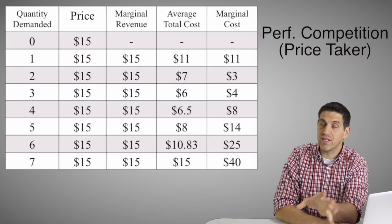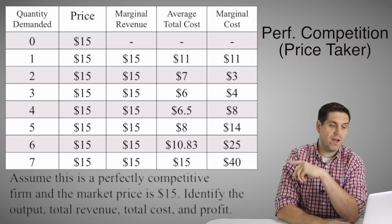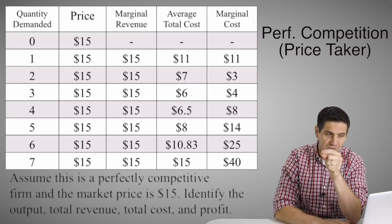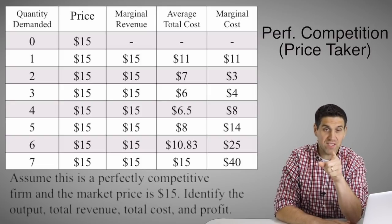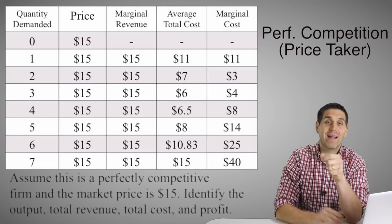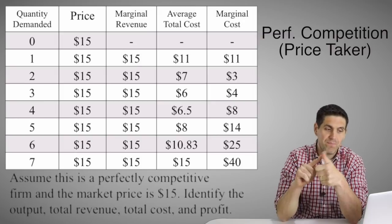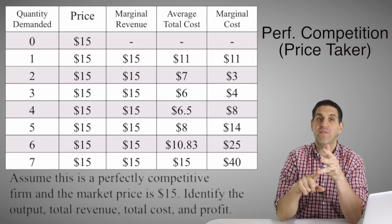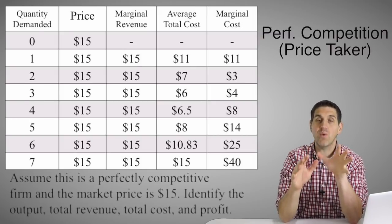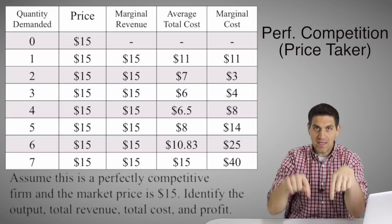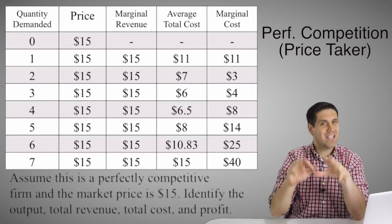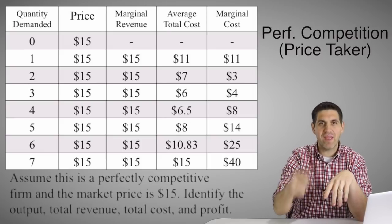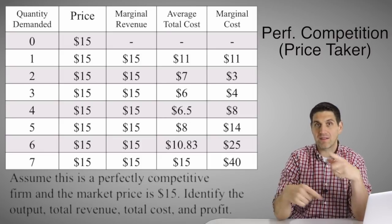Now I have enough information to do some calculations using the chart. If this is a perfect competitive firm and the price is $15, identify the output, the total revenue, total cost, and calculate the profit. Pause the video, see if you can do it, and then start back up. We'll go over the answers and give you more practice questions.